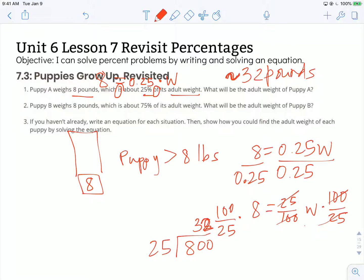What will be the adult weight of puppy B? Before I do this one and put it in an equation, I want to think to myself, who is going to weigh more? Puppy A or puppy B? Right now, puppy B is 8 pounds, but it's 75% of its adult weight. It's much closer to its adult weight than puppy A was.